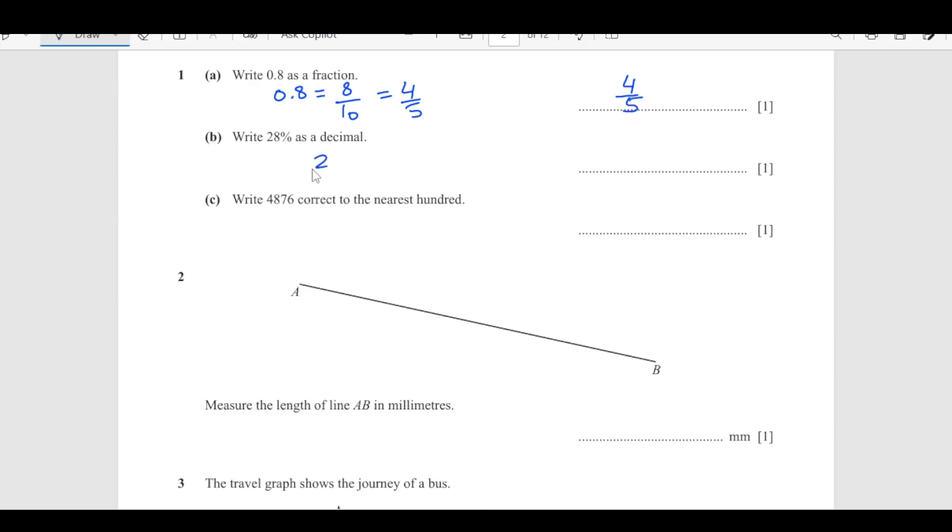Write 28 percent as a decimal. 28 percent means 28 over 100, so this is going to be 0.28. Final answer is 0.28.